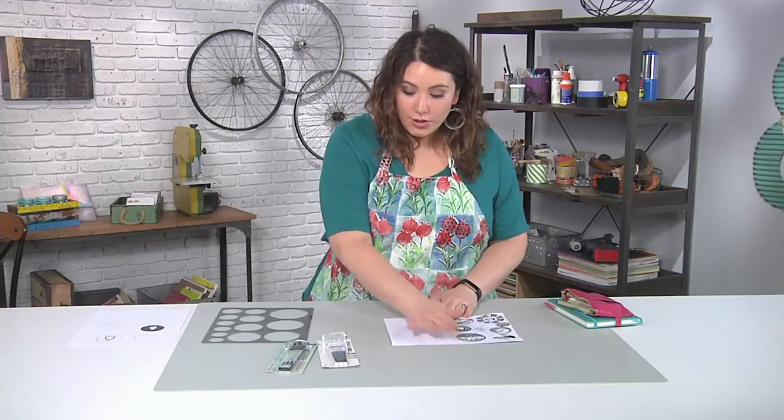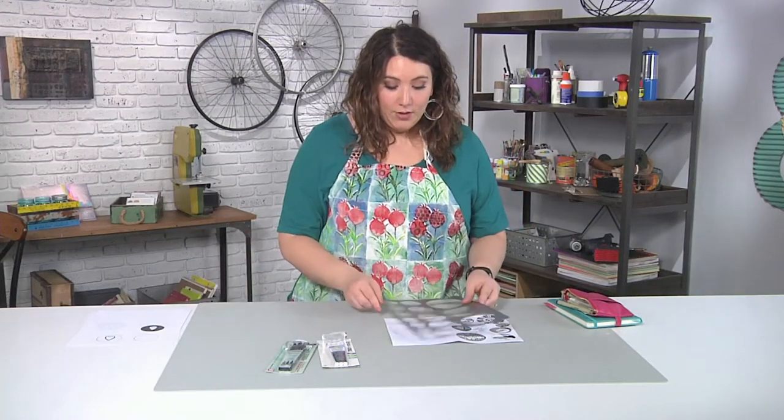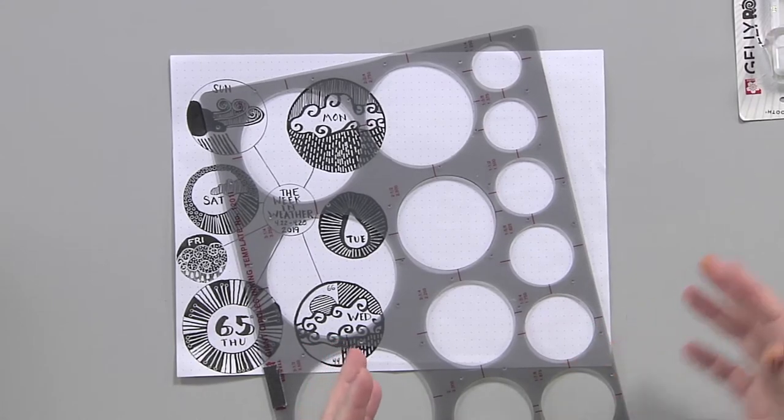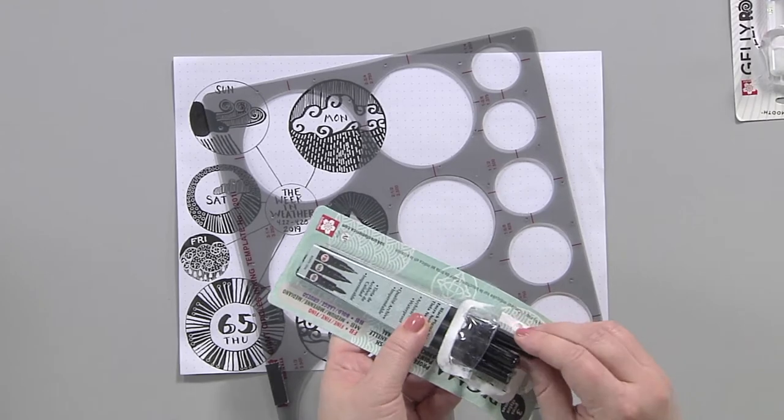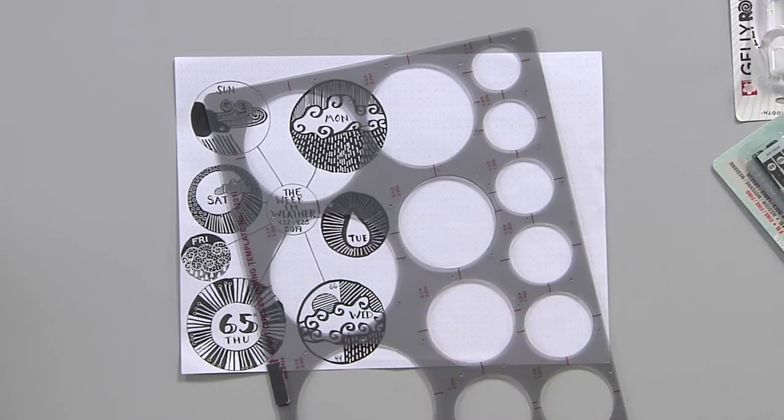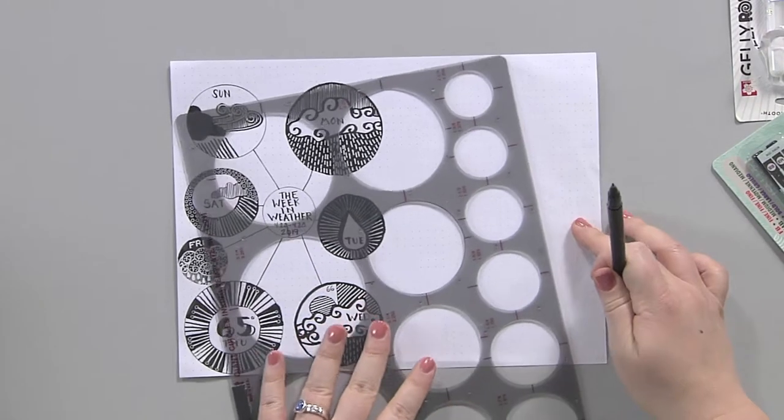So to make a page like this in your own bullet journal, what you're going to do is take a circle stencil. And I love a stencil that has a lot of different choices. Then again you want to use a black pen that's not going to leak through. I am going to use a fine tip pen to do these circles because they're just the basic outlines.